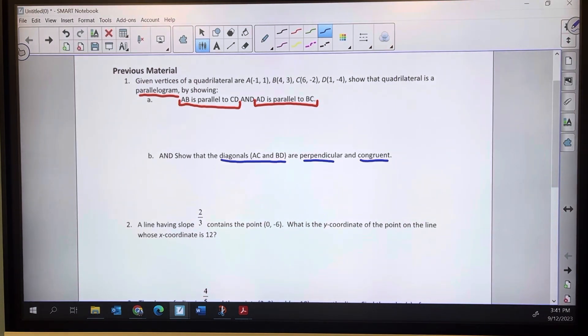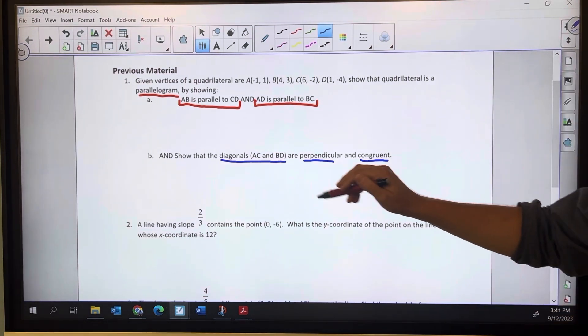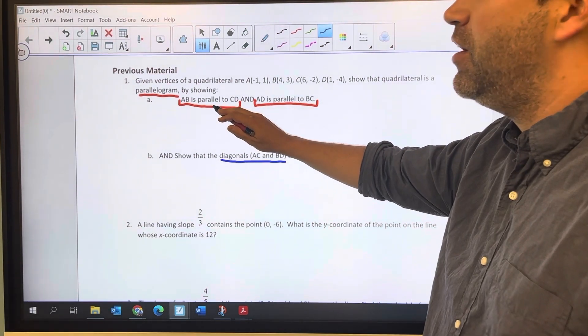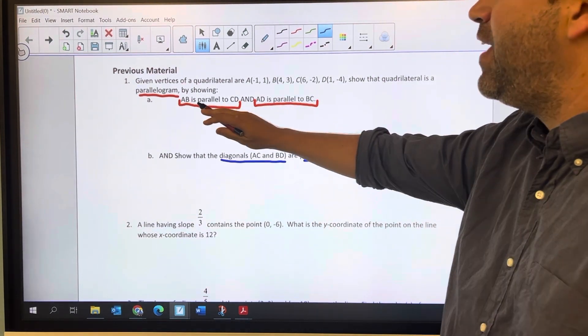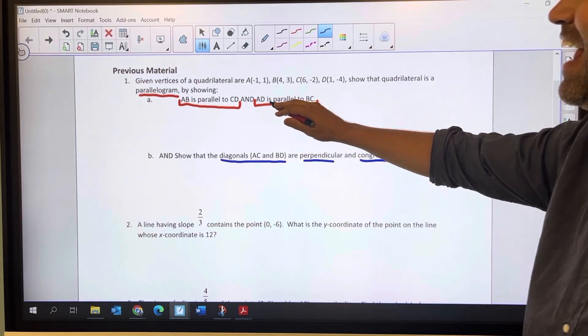So I'm going to organize my work like this. To show the sides parallel I'm going to show the slopes are equal on both AB and CD and AD and BC.